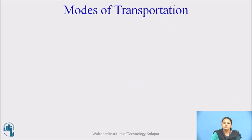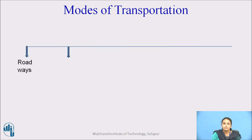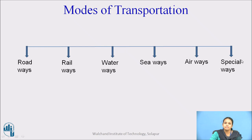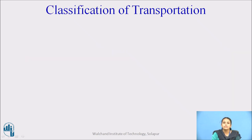We have various modes of transportation: roadways, railways, waterways, seaways, airways, and spatial ways. These all transportation systems are well known to you. Spatial ways refers to cableways or ropeways.